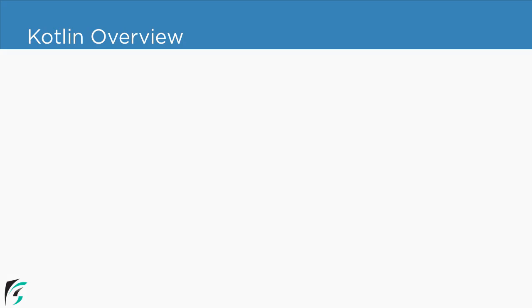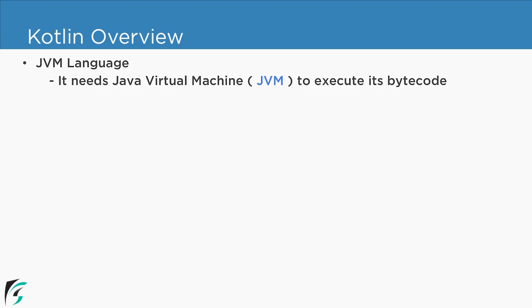So what is Kotlin? Kotlin is a statically typed language and it is also known as a JVM language. Why? Because Kotlin needs the Java Virtual Machine to execute its bytecode, similar to other JVM languages like Scala, Java, Jython, JRuby and so on. Since Kotlin is a JVM language, it is fully interoperable with other JVM languages, including Java.